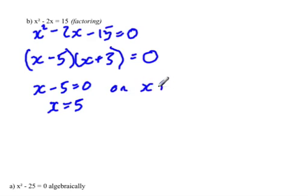Or x plus 3 has to be equal to 0. And subtract 3 from both sides or solve by inspection. x is equal to 0 minus 3 is negative 3. So the two possible answers are x equals 5 and x equals negative 3.